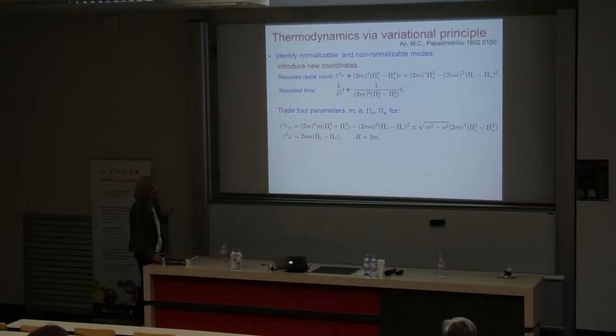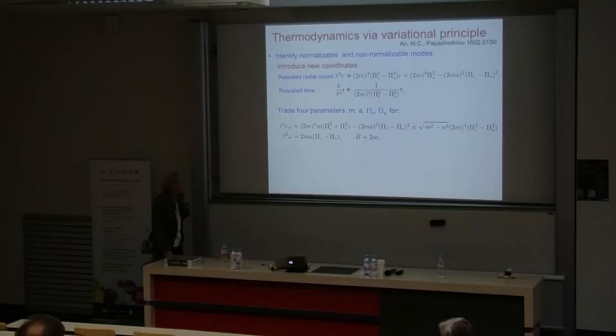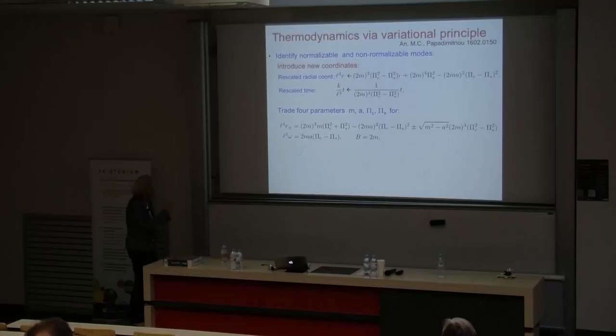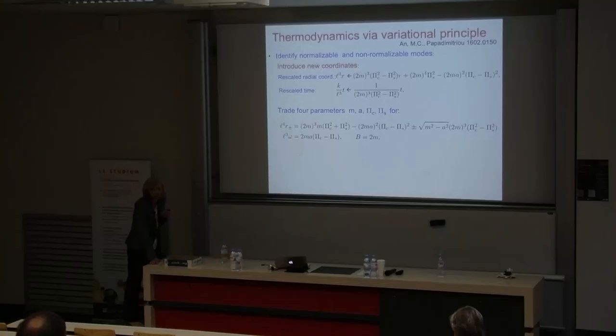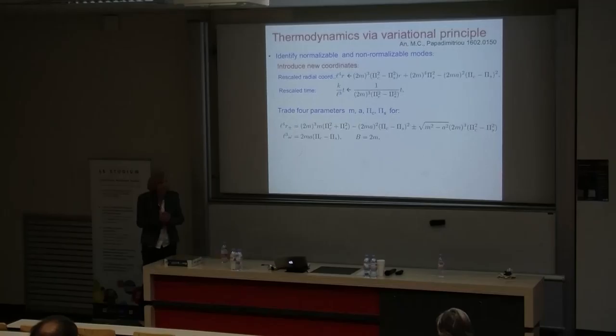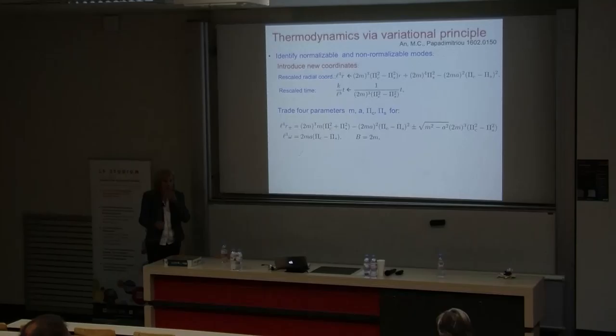Let me now go algorithmically through the steps summarized earlier. We are looking at the subtracted geometry and want to identify in this parametrization what would be normalizable and what would be non-normalizable modes. For technical reasons, we first rescale the radial and time coordinates introducing two new parameters. The subtracted geometry is parametrized by bare mass, bare angular momentum, and the π_c and π_s coefficients. We trade these four parameters for three: r₊, r₋, and ω, where r₊ and r₋ are the two horizon parameters in the new coordinates and ω is related to the bare angular velocity.